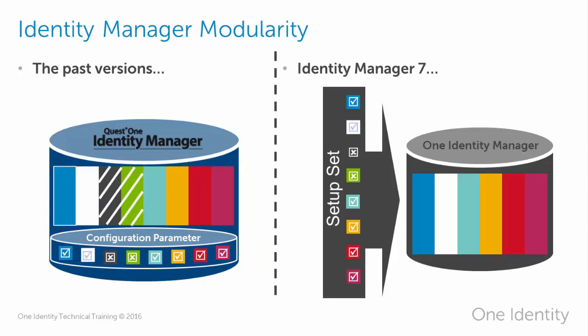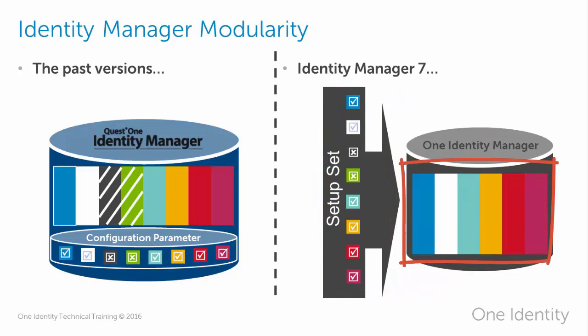This is how version 6 of the Identity Manager works. In version 7, the R&D team took a completely different approach. They started to break the Identity Manager into pieces. The setup set decides which parts of the Identity Manager have to be installed. In contrast to the previous version, you install only the parts you really need. The setup set asks you what is to be installed, and at the end you get exactly the schema, API parts, and software parts needed to fulfill your goal.